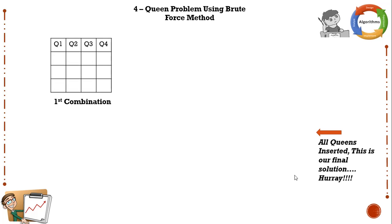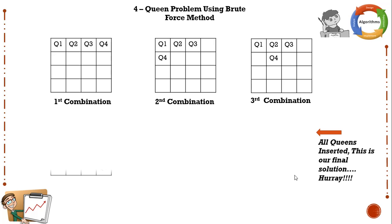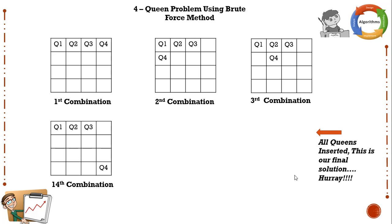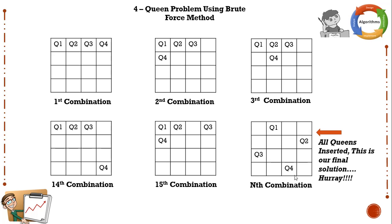Let us see how to solve the 4-Queens problem using brute force. The first combination has Q1, Q2, Q3, Q4 placed serially — the queens are attacking each other, so this is not a solution. The second combination changes the position of Q4 to the next step — again Q1, Q4, and Q2 are attacking each other. We keep changing Q4's position through all 14 combinations, then change Q3's position. Eventually we arrive at a particular combination where none of the queens attack each other, and that is the final solution.